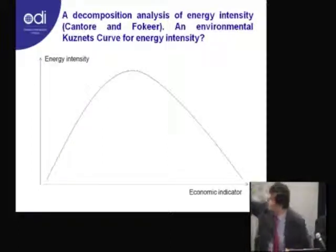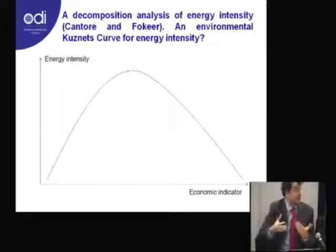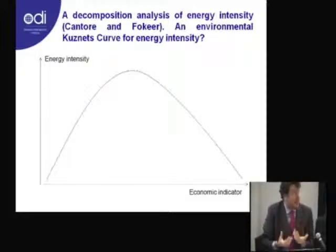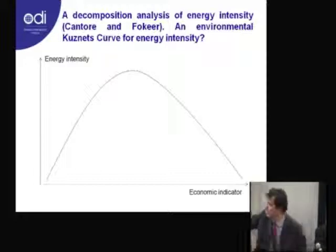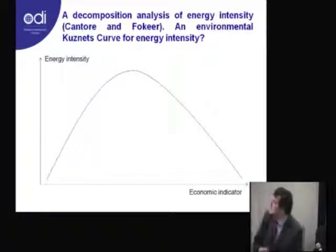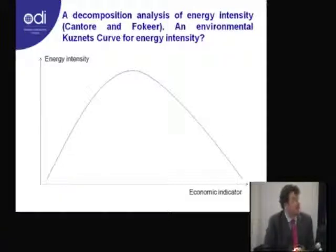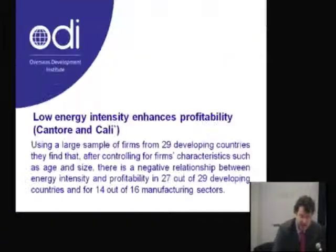In the upward portion of this curve, probably there are developing countries. And for developing countries, technical efficiency is predominant compared to structural change. In the other, downward section of the Environmental Kuznets Curve, probably we find high income countries for which structural change is dominating the technical intensity effect.